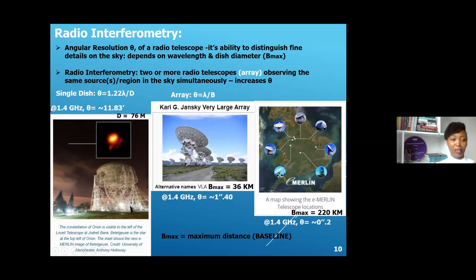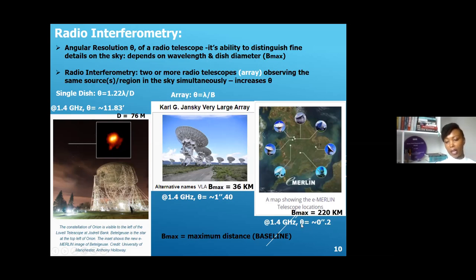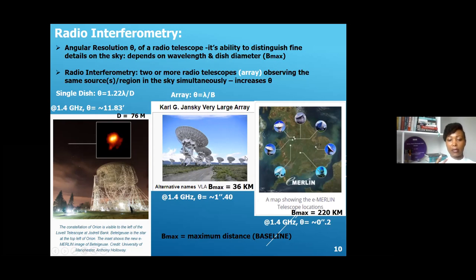At a frequency of 1.4 gigahertz, the angular resolution using a single dish is 11.83 arc minutes. Bringing in a couple of telescopes with a maximum baseline of 36 kilometers, you improve this angular resolution to about 1 arc second. Similarly, when you add in e-MERLIN, due to this long baseline, you greatly improve the angular resolution from 11.81 arc minutes all the way to 0.2 arc seconds. So radio interferometry enables us to achieve very high angular resolution without having to construct a huge telescope of 220 kilometers, which is physically impossible.